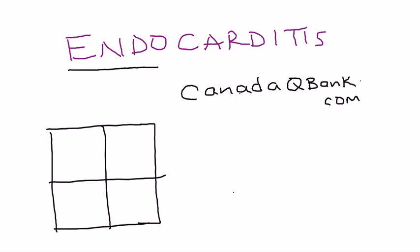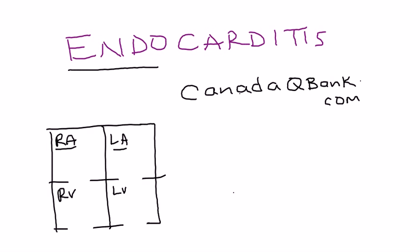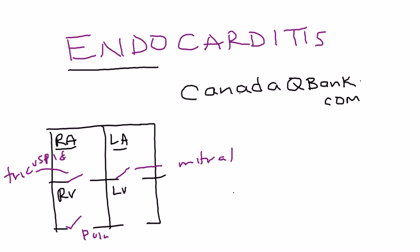If we were to draw a very basic diagram of the heart chambers: left atrium, right atrium, right ventricle, left ventricle. The heart valves are in these areas. This one here is your tricuspid, this one is the mitral valve, this one is the pulmonic valve, and finally that one is aortic.